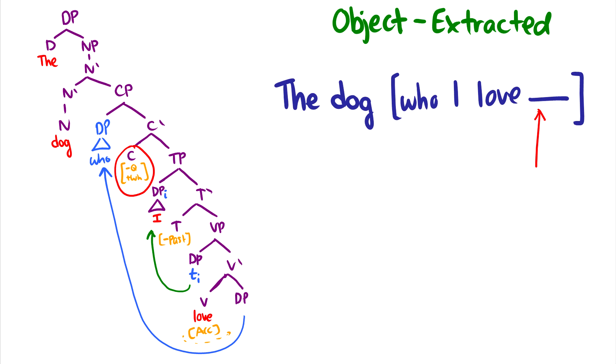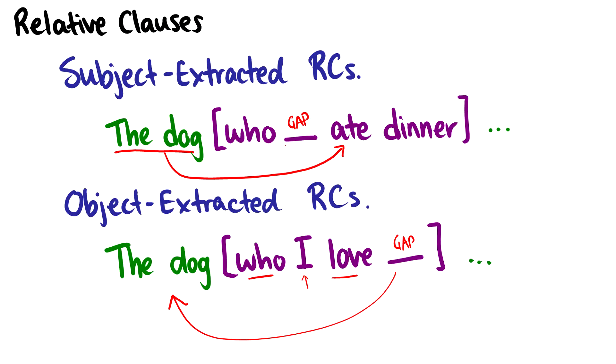In fact, some interesting thing which I'm just going to tag on to the video is that in subject-extracted relative clauses in English it maintains a subject verb object word order. So the gap is the subject, then the verb, and then the object. But in object-extracted relative clauses the object appears first disguised as who, and then it's a subject and then a verb. So even English has variations of object subject verb embedded clauses.